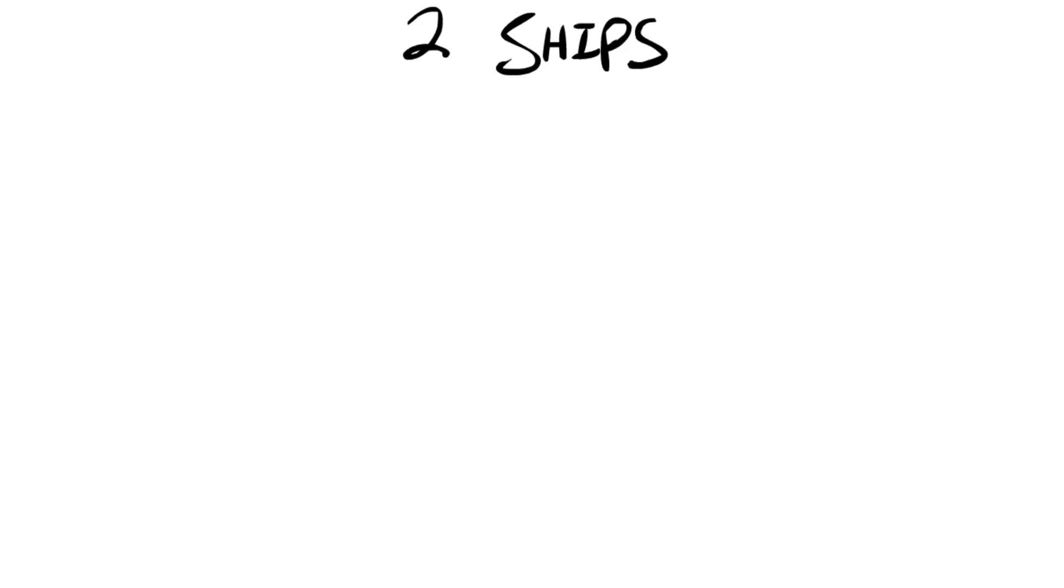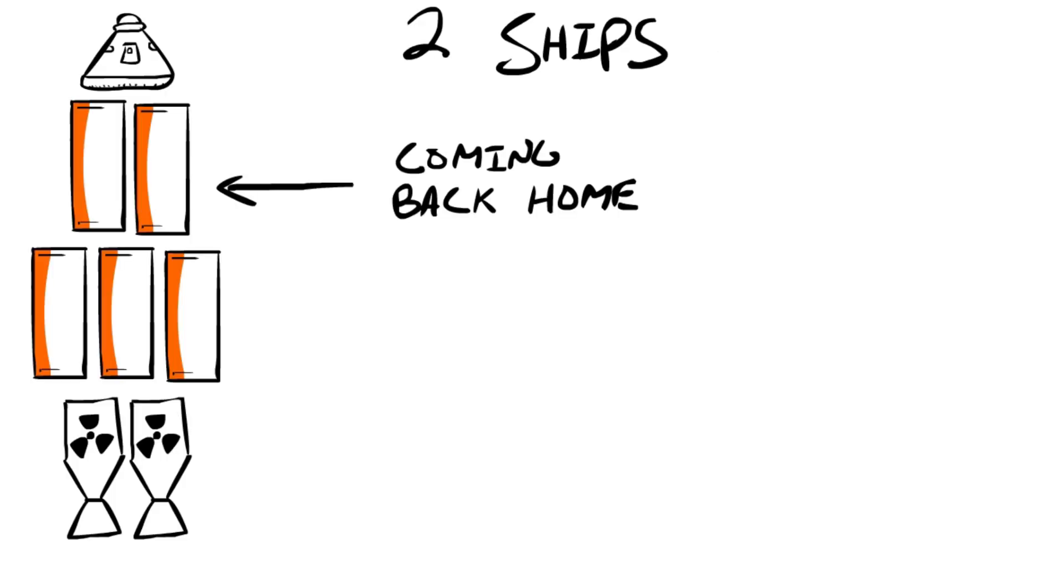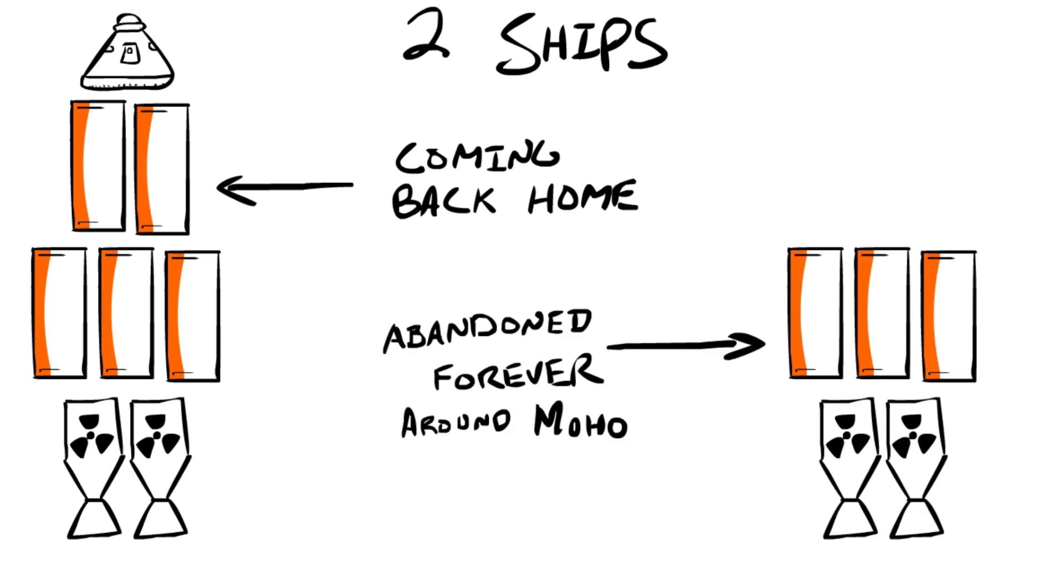One that's going to go to Moho and back carrying our crew, and a second that's going to be abandoned around Moho forever. With the crew vessel, two of the tanks are going to be dedicated to getting to Moho. Three of the tanks are going to be dedicated to orbiting around Moho and returning to Kerbin.